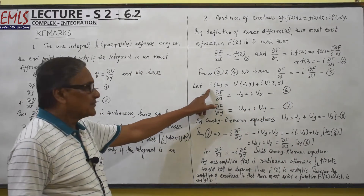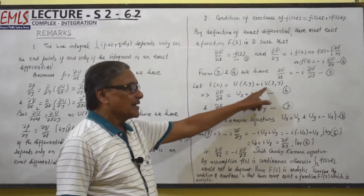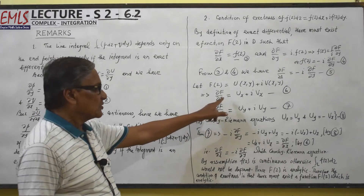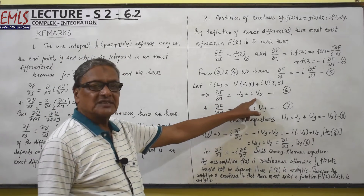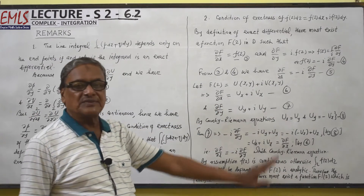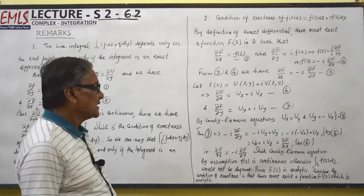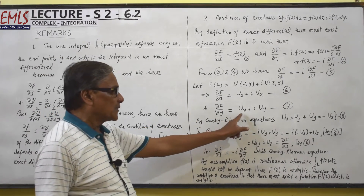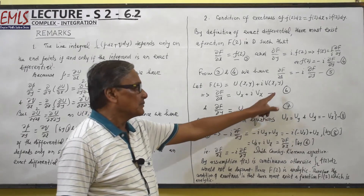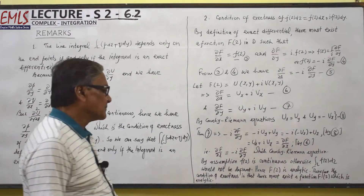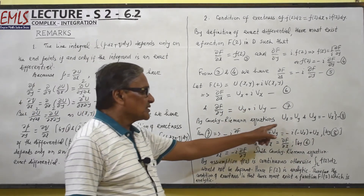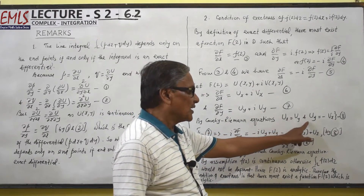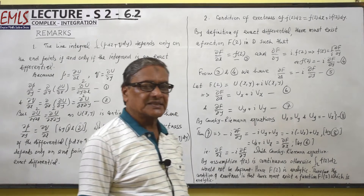Let capital F(z) equal u(x,y) plus i times v(x,y). So ∂F/∂x equals u_x plus i·v_x — that is, the partial derivatives of u and v with respect to x (equation 6). Similarly, ∂F/∂y equals u_y plus i·v_y (equation 7). By the Cauchy-Riemann equations: u_x equals v_y and u_y equals minus v_x (equation 8).